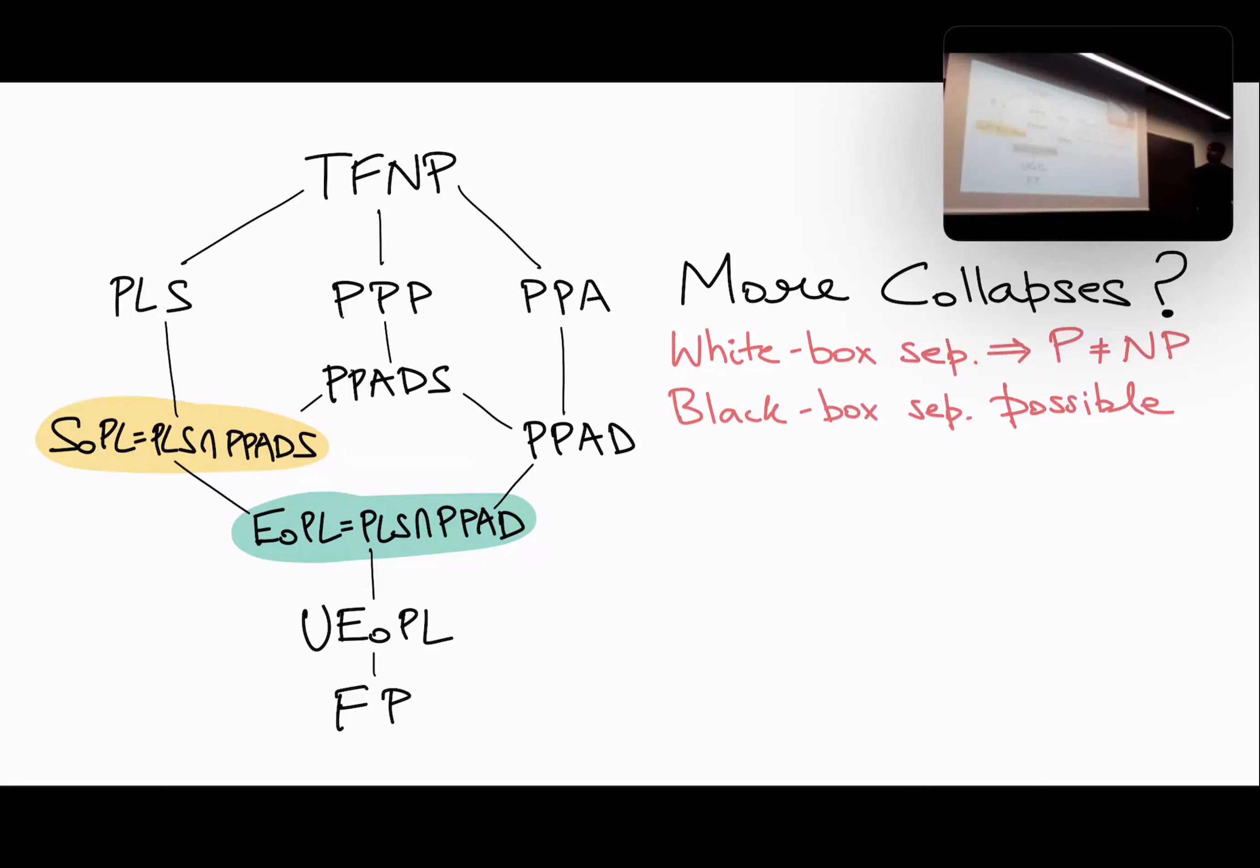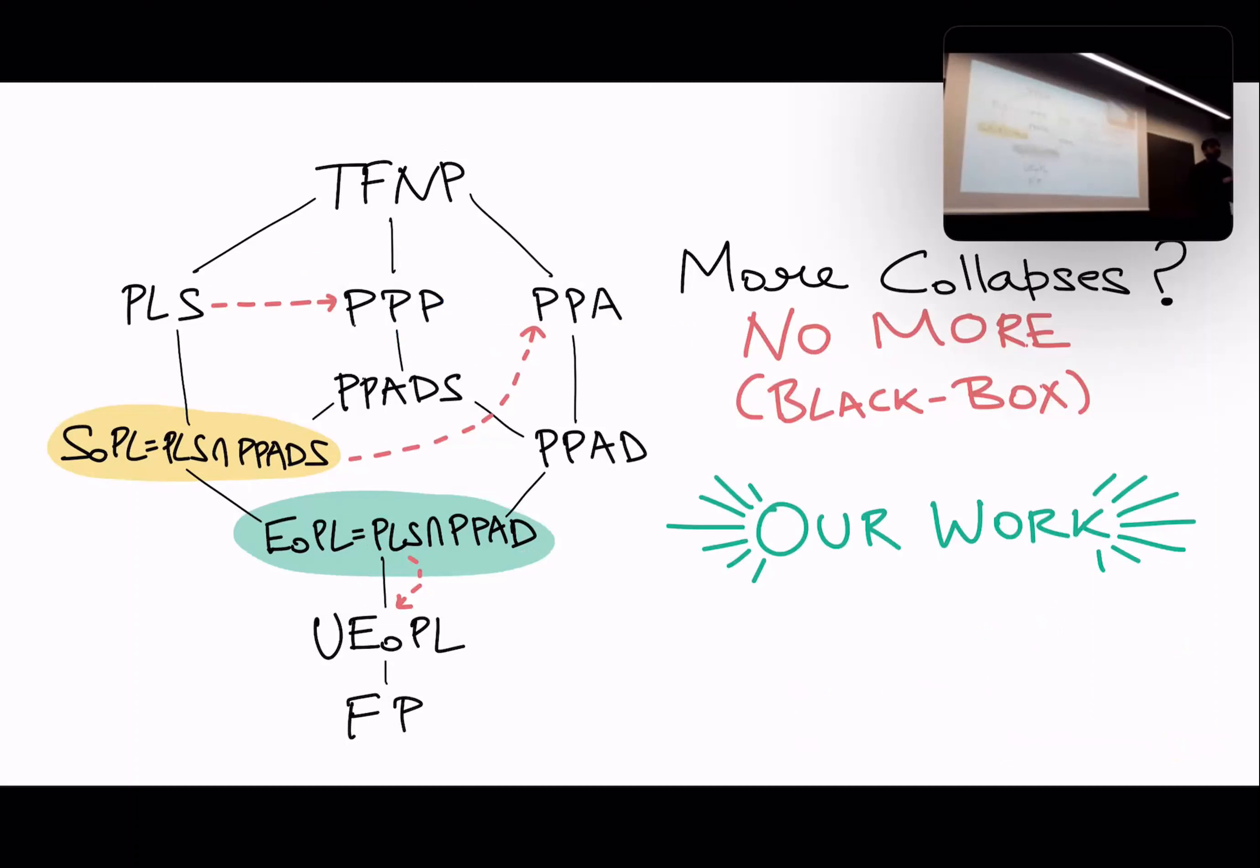So we can't really hope to give a white box separation right now. But we could give a black box separation, which is quite common. So what's known? There is this paper by Beame et al, which basically showed that these triangle complexity classes are incomparable to the cross model. There was some follow-up work which basically resolved that this right tower isn't comparable to the left tower.